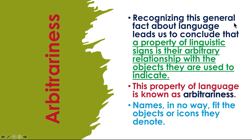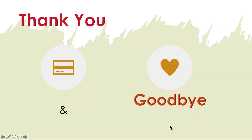Recognizing this general fact about language leads us to conclude that a property of linguistic signs is their arbitrary relationship with the objects they are used to indicate. This property of language is known as arbitrariness — names in no way fit the objects they denote. I hope you understand the lesson. Thank you and goodbye.